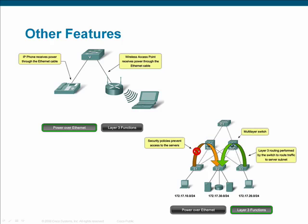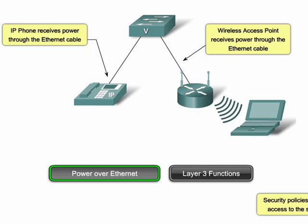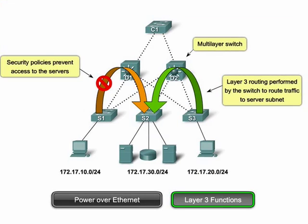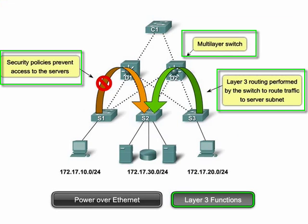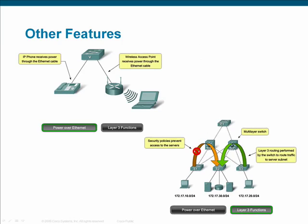Other features that should be considered when selecting access, distribution, or core layer switches include Power over Ethernet (PoE) functionality and Layer 3 switching capability. PoE enables switches to supply power to access layer devices such as IP telephones or wireless access points, relieving the need for electrical outlets near such devices. Layer 3 capability enables a switch to perform forwarding based upon IP addresses rather than MAC addresses, allowing for faster packet switching than routers — ideal for LAN environments. Quality of service (QoS) and VLAN support are also critical for today's converged networks.